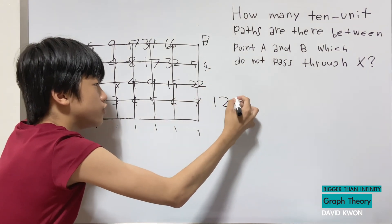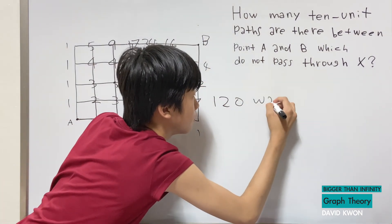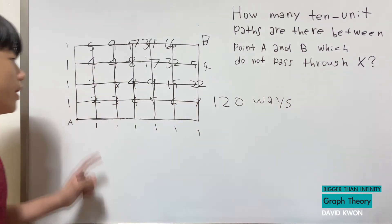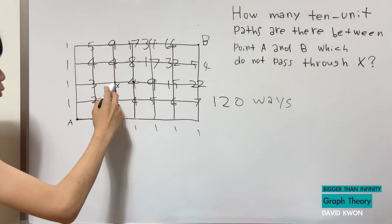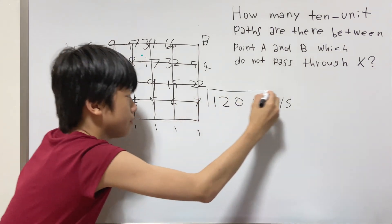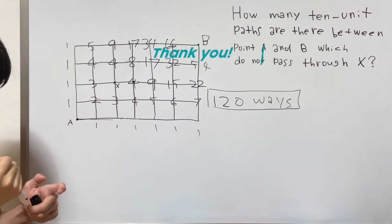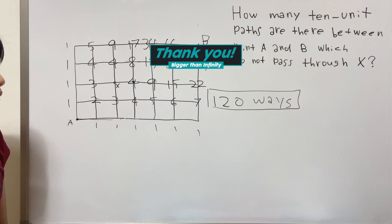So there is a total of 120 ways for A to go to B without going to this point. Thank you guys so much for watching this video, so bye.